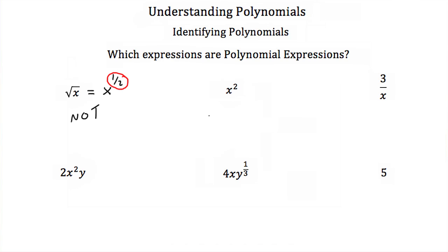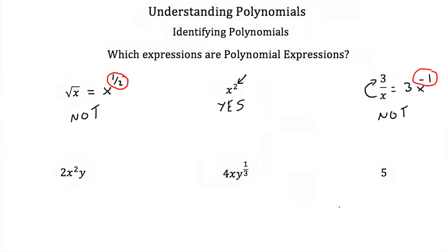Next, we have x squared. The 2 is a whole number, so yes, this would be a polynomial expression. Our next example, we have 3 divided by x. I can rewrite this as 3 times x to the minus 1 — all I'm doing is bringing the x up into the numerator. But since we have this negative 1 exponent, and negative 1 is not a whole number — it's an integer — so this is not a polynomial expression.